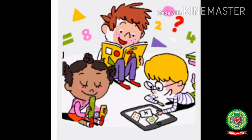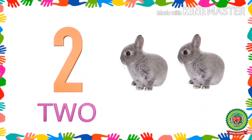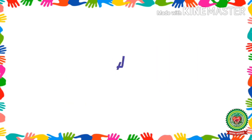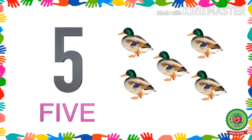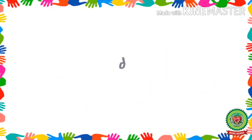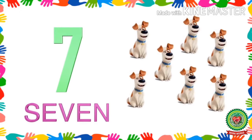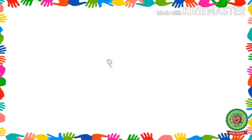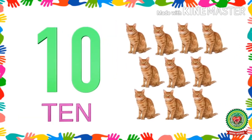Now children, speak along with me. 1 - O-N-E, 2 - T-W-O, 3 - T-H-R-E-E, 4 - F-O-U-R, 5 - F-I-V-E, 6 - S-I-X, 7 - S-E-V-E-N, 8 - E-I-G-H-T, 9 - N-I-N-E, 10 - T-E-N.